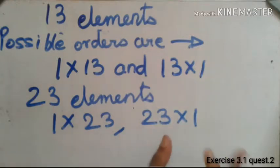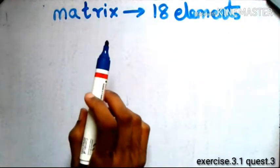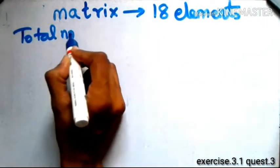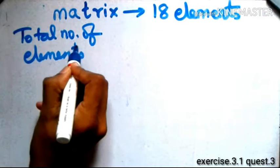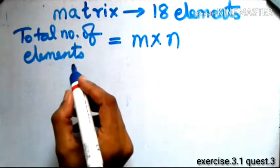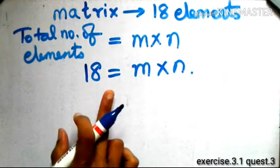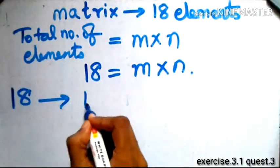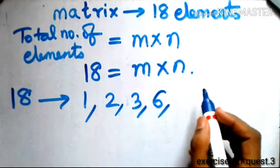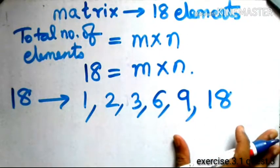The next question asks for all possible orders of a matrix with 18 elements. Using the same formula, 18 = m×n. We need to find the factors of 18, which are: 1, 2, 3, 6, 9, and 18.